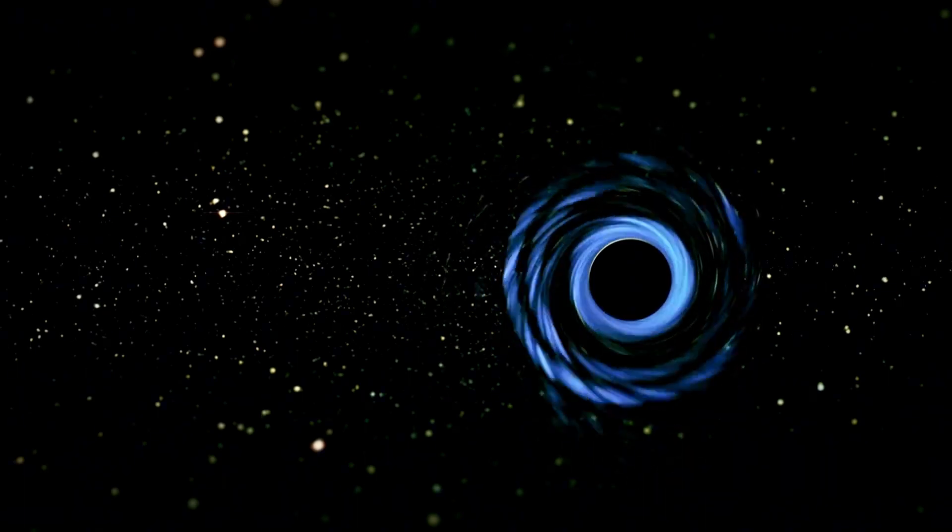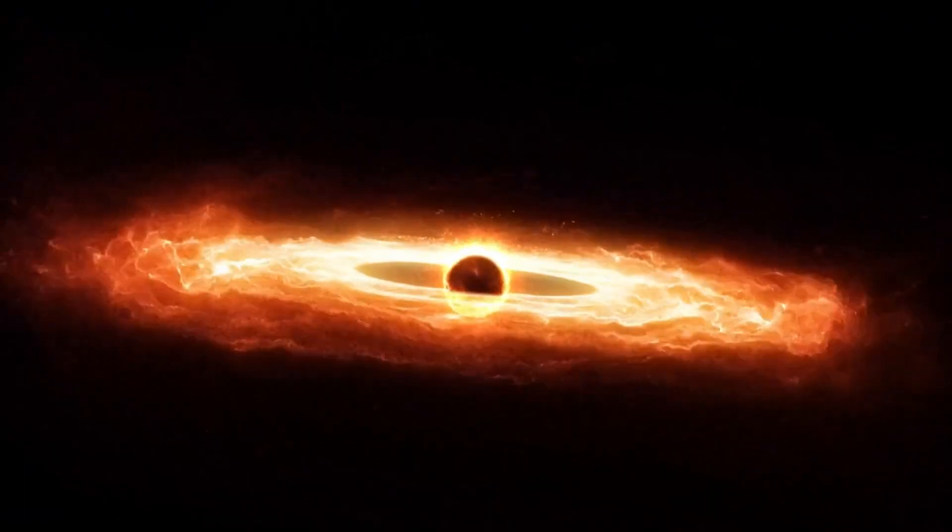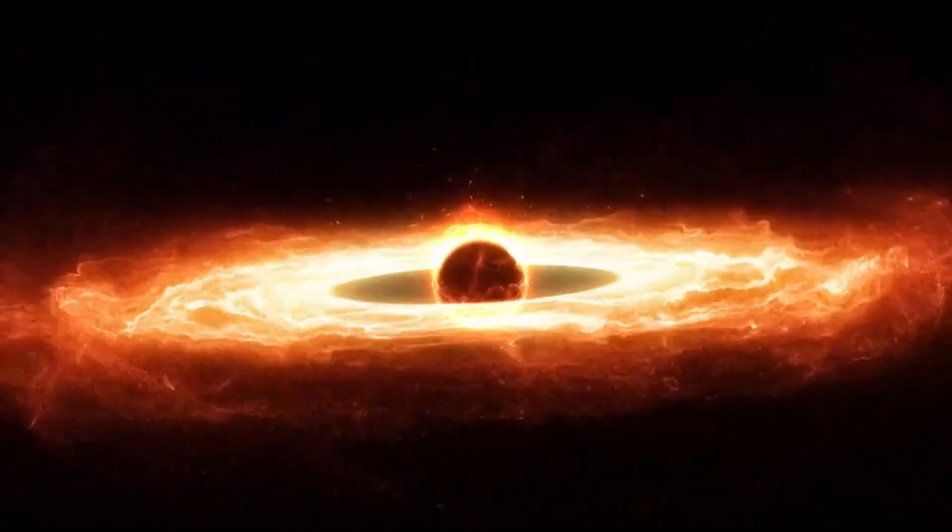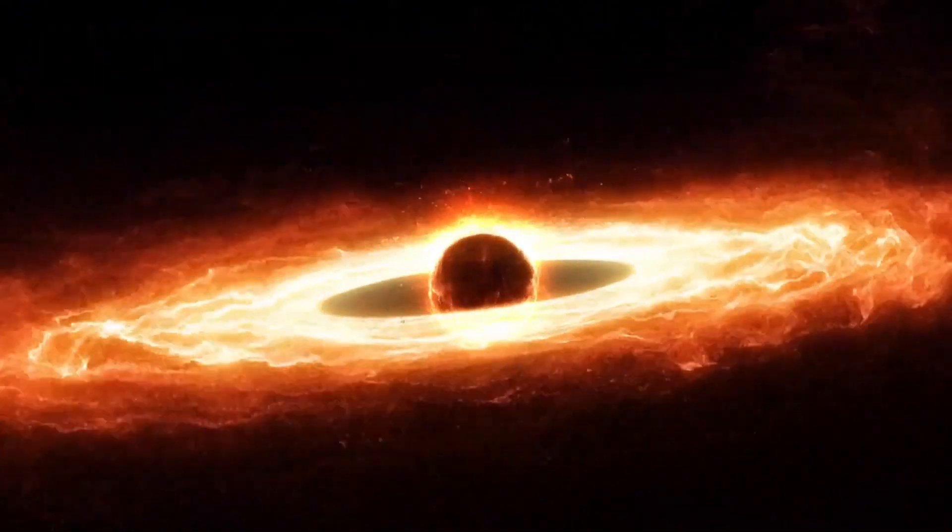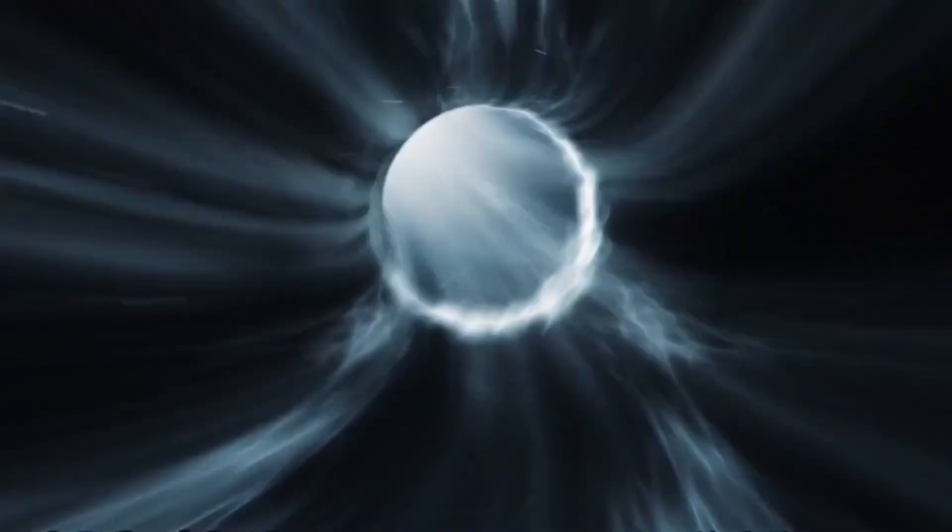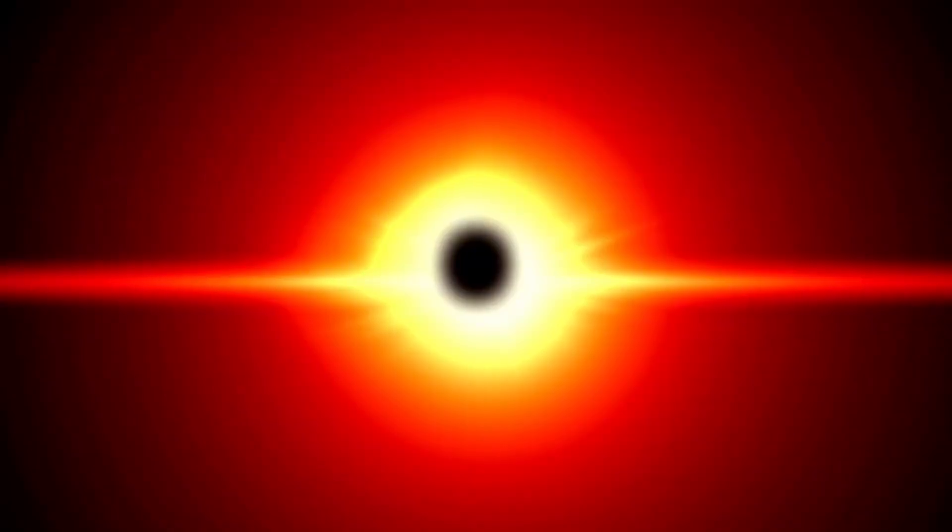Theories about the origins of black holes suggest that they may form when massive stars collapse in on themselves. As a star burns through its fuel, it can no longer produce enough energy to counterbalance the inward pull of gravity, leading to its eventual collapse into a black hole. If the star is massive enough, this process continues until the collapsing matter becomes a singularity.